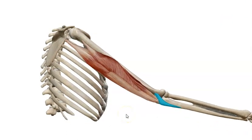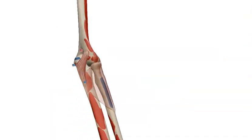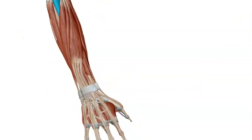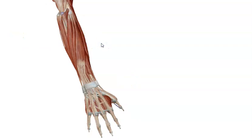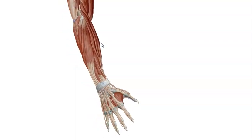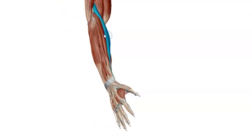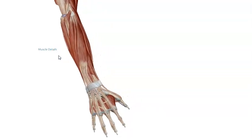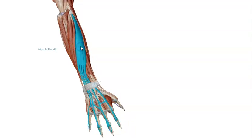We have reached the end of our demonstration of the superficial group of the back of the forearm. From lateral to medial: three radialis muscles on the radial side, three muscles on the dorsal aspect acting on the fingers — extensor digitorum, extensor digiti minimi, and extensor carpi ulnaris — and the small triangular anconeus behind the elbow. The next video will cover the deep layer of the back of the forearm. Goodbye and good luck.